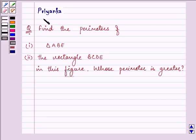Hello and how are you all today? My name is Priyank and let us discuss the question. It says find the perimeters of first of all triangle ABE and then the rectangle BCDE in this figure. Whose perimeter is greater?